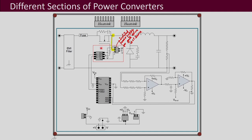The PWM pulses are coming from a microcontroller IC. This microcontroller generates the PWM pulses. The reference here is with respect to the ground or the reference of the microcontroller IC, while on this side the reference is the source of the MOSFET.